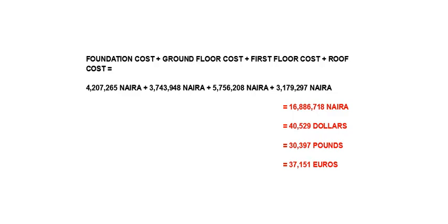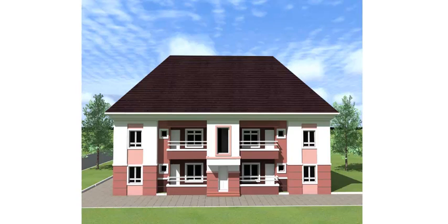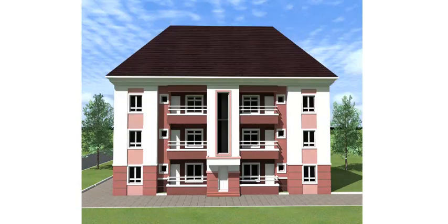So the cost of building the frame of this two-bedroom block of flats with four apartments in it is 16,886,718 Naira, approximately 40,529 dollars, 30,397 pounds or 37,151 euros. And this brings us to the end of this video. Please remember to like and share this video with your family and friends — it really helps the channel grow. Also remember that the prices in this cost do not include things like plastering, painting, tiles, doors, windows, plumbing, electricals and so on — we will do that in a subsequent episode. And in a week or two from now I'll be posting the cost of this building with 6 flats instead of 4. Thank you very much for watching and I'll see you in the next video.